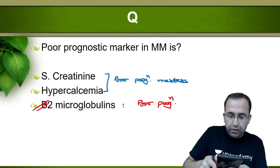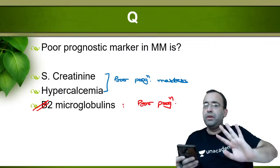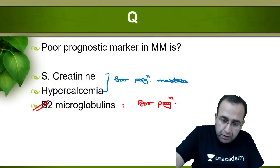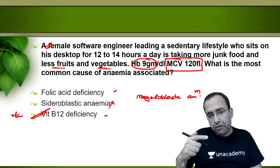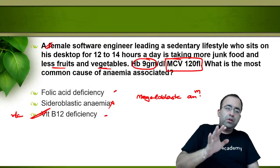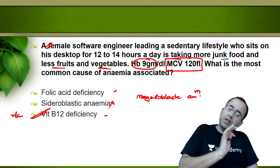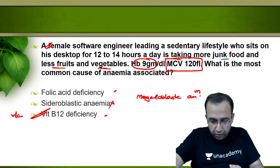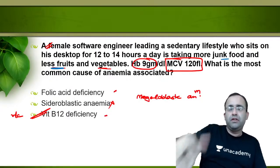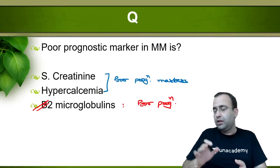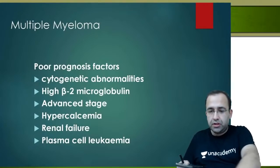Clarification on megaloblastic anemia: vitamin B12 stores are lesser in the body, so vitamin B12 deficiency is much more common. The bottom line is that the patient is on junk food and not taking proper food — the most common anemia associated is vitamin B12 deficiency. Do not mark it as folic acid deficiency — mark it as vitamin B12 deficiency.